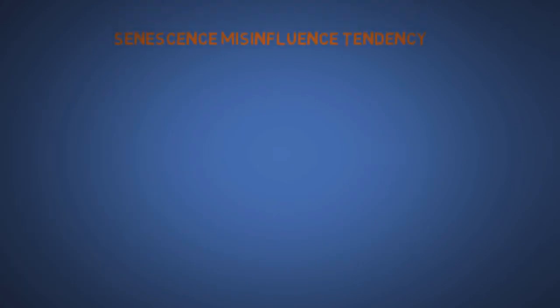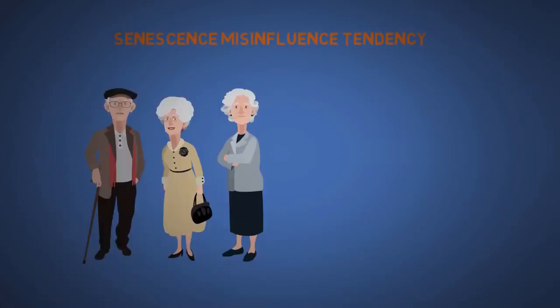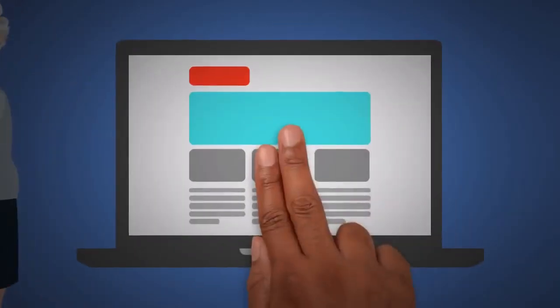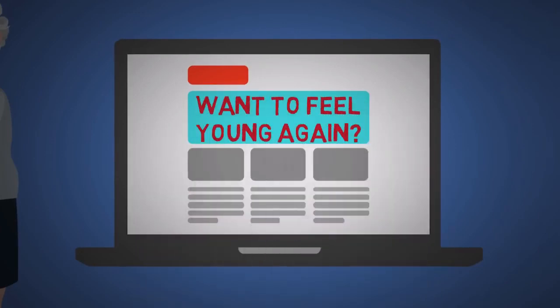The twenty-first is senescence misinfluence tendency. As we age, there is a natural loss of certain skills and abilities. So if you've got a website targeted for older people, make sure the fonts are big. Try to speak slower and enunciate your words more.